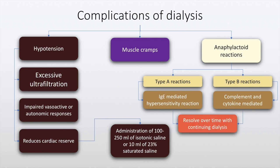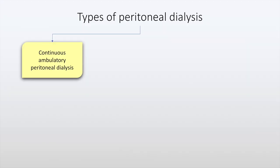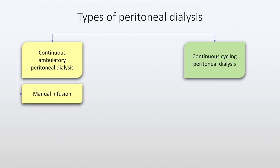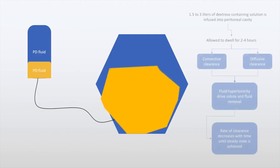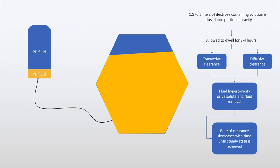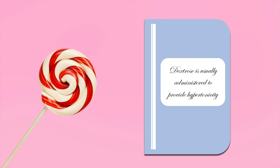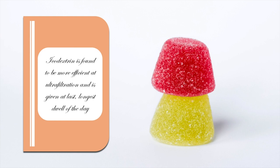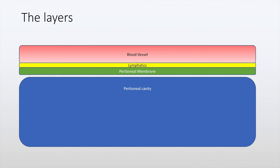These generally resolve over time with continuing dialysis. The next modality is peritoneal dialysis, which may be either continuous ambulatory peritoneal dialysis or CAPD, in which manual infusion is undertaken, or it may be continuous cycling peritoneal dialysis in which the dialysate is infused automatically. In peritoneal dialysis, 1.5 to 3 liters of dextrose-containing solution is infused into the peritoneal cavity and allowed to dwell for 2 to 4 hours. Convective and diffusive clearance account for clearance of solutes along with fluid hypertonicity. The rate of clearance usually decreases with time until a steady state is achieved. Recently, the use of icodextrin is found to be more efficient at ultrafiltration and is given at the last longest dwell of the day.